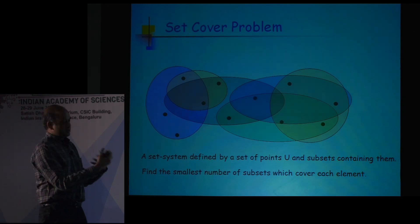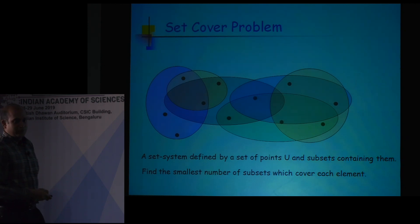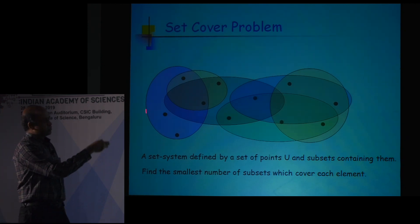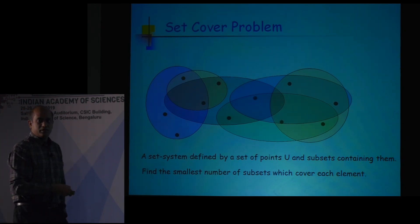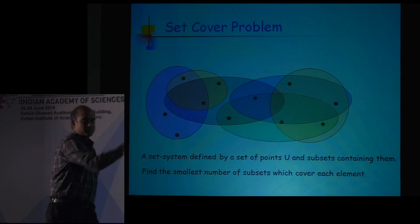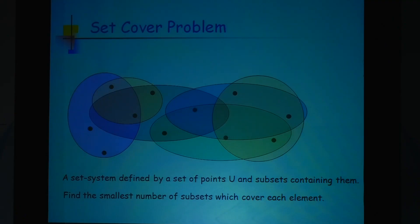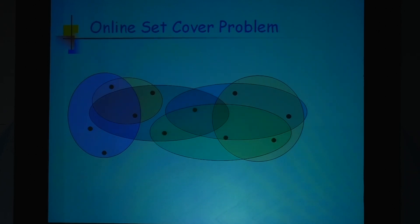There are many applications where points could be potential demands and disks could be resources that service those demands — you want to use as few resources as possible. For example, picking this disk, this disk, and this disk will cover everything.